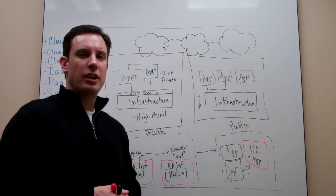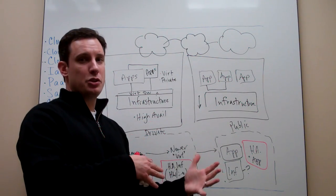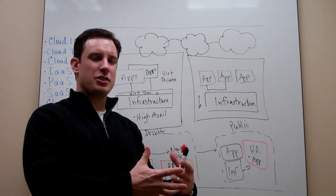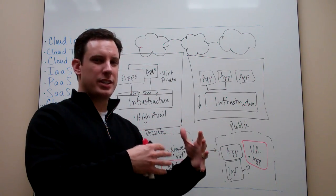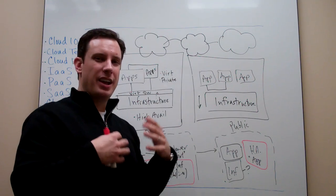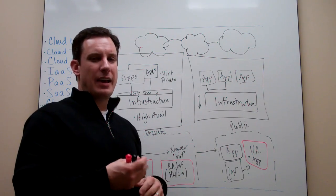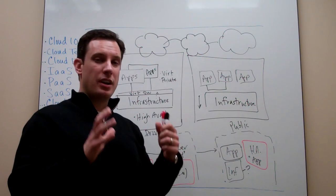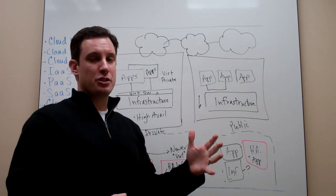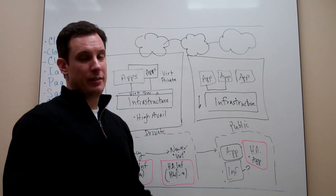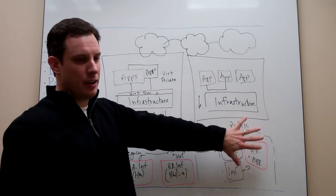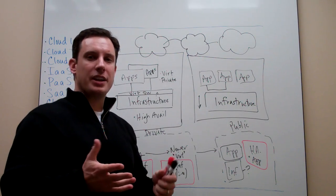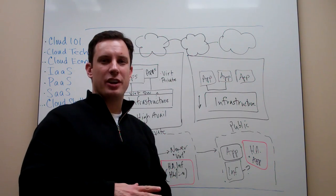Hopefully this was helpful to give you an overview of the evolution of availability for cloud infrastructure and cloud applications — why it's evolved and the types of decisions that people deploying clouds need to be aware of to make sure their application stays highly available, whether that availability is coming from the software layer, the application layer, or the infrastructure layer. Thanks again for watching, and have a great day.